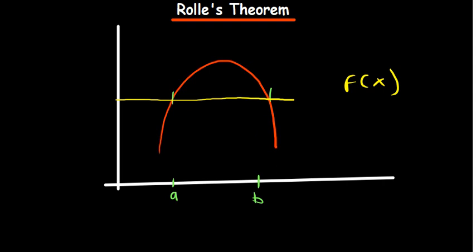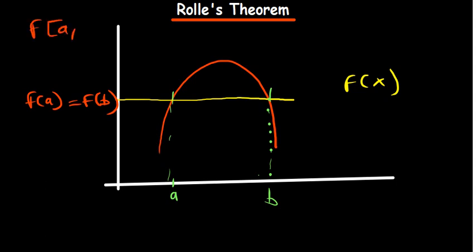So b is somewhere straight down there and this is our a. As we can clearly see, f(a) is equal to f(b) — that's the third condition satisfied. Now the first condition requires the function to be continuous on the closed interval [a, b]. Looking at this function, we can clearly see it is continuous.